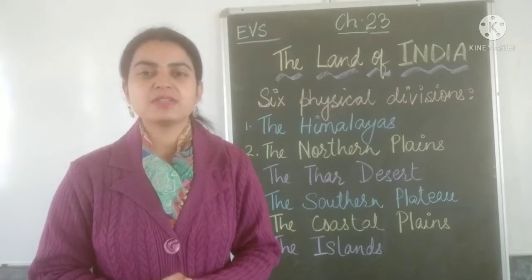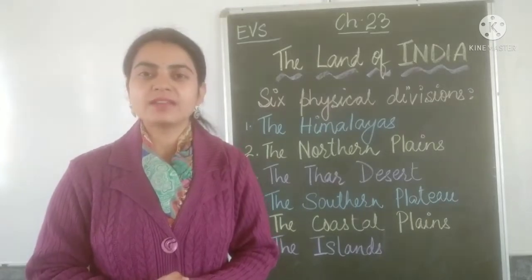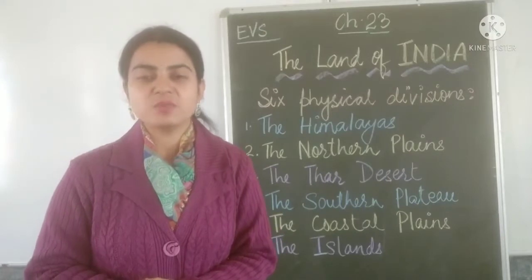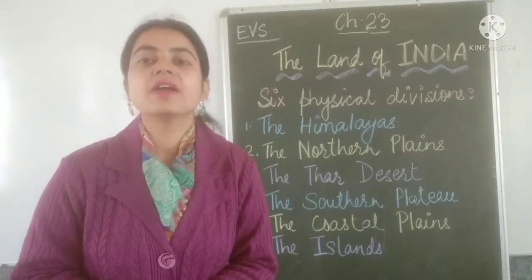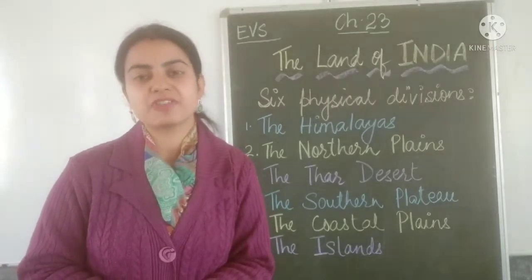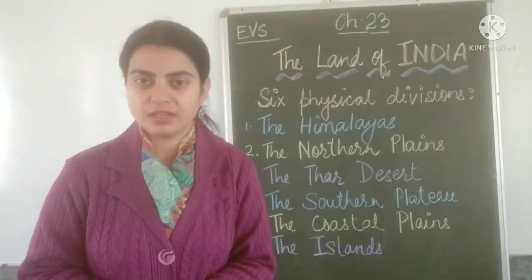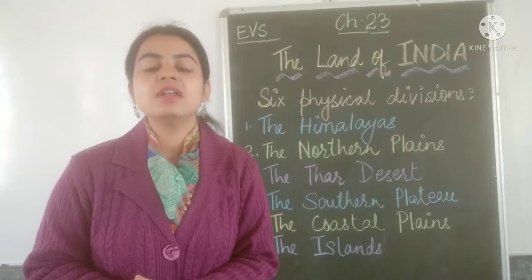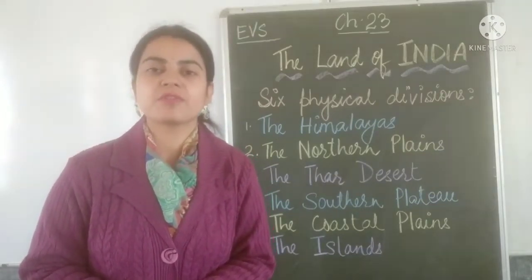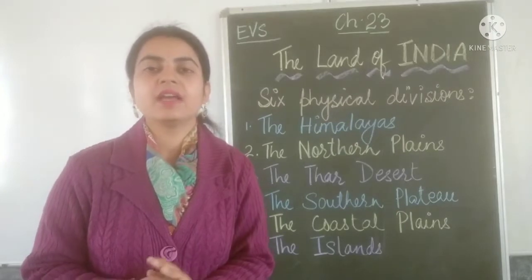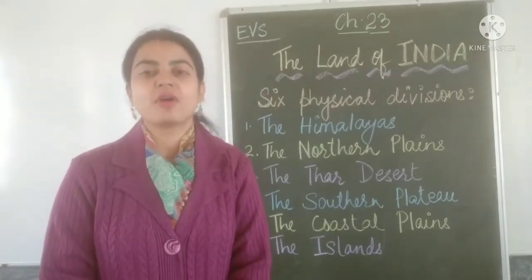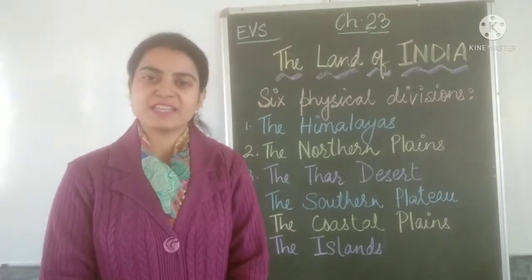Welcome back dear students. Now that the summary of chapter 23, 'The Land of India,' has been explained to you, you now know what the six important physical divisions of our country are. We will now proceed towards the keywords and things to remember from the chapter, and then gradually do the book exercises and question answers. So let's get started.